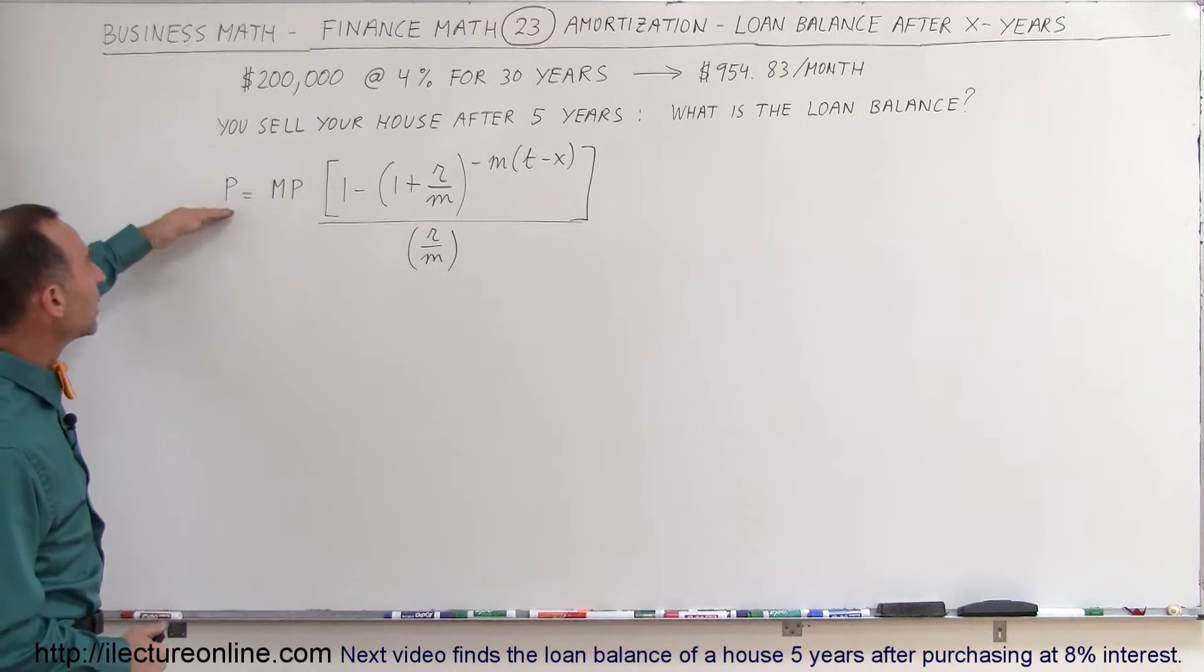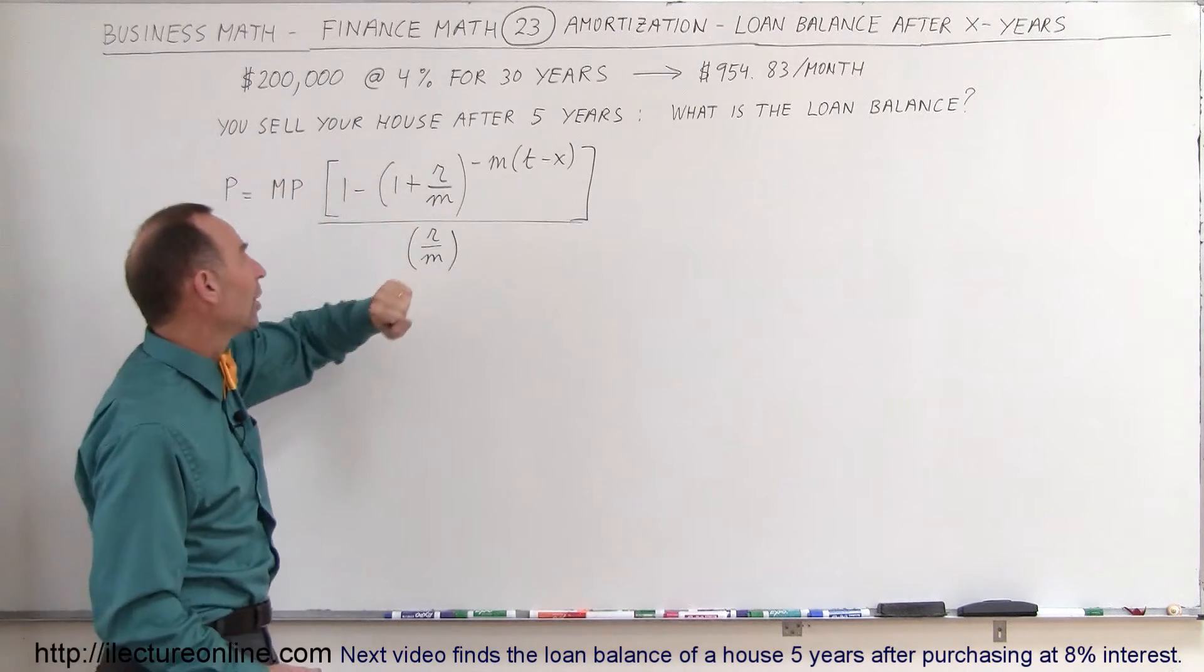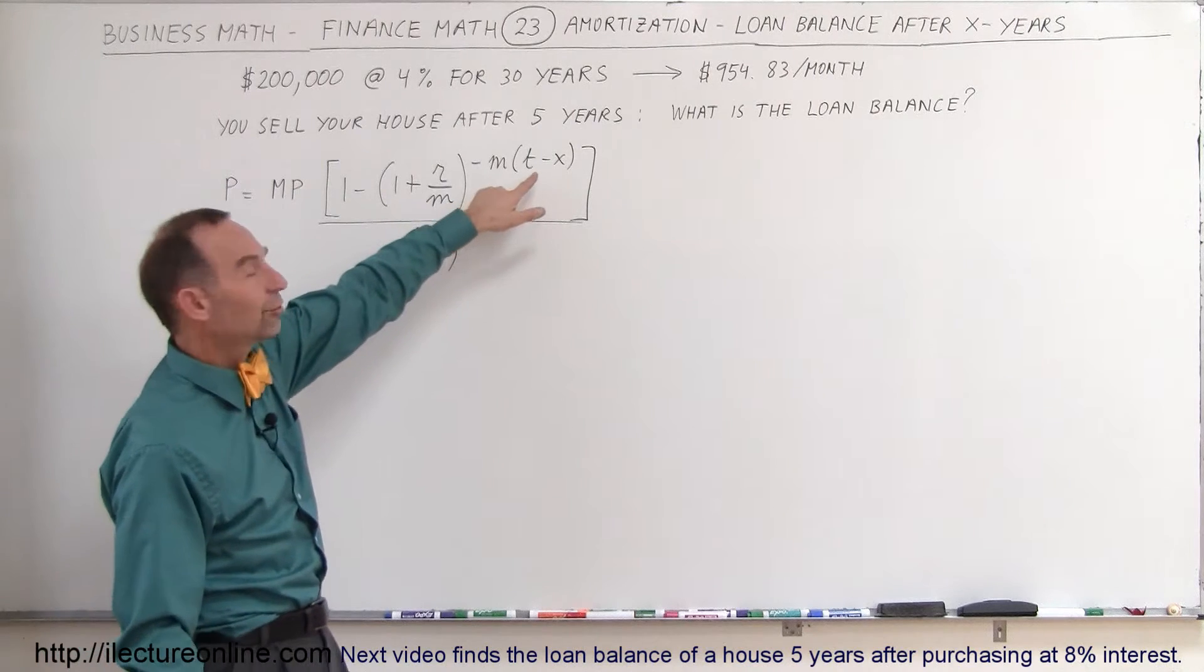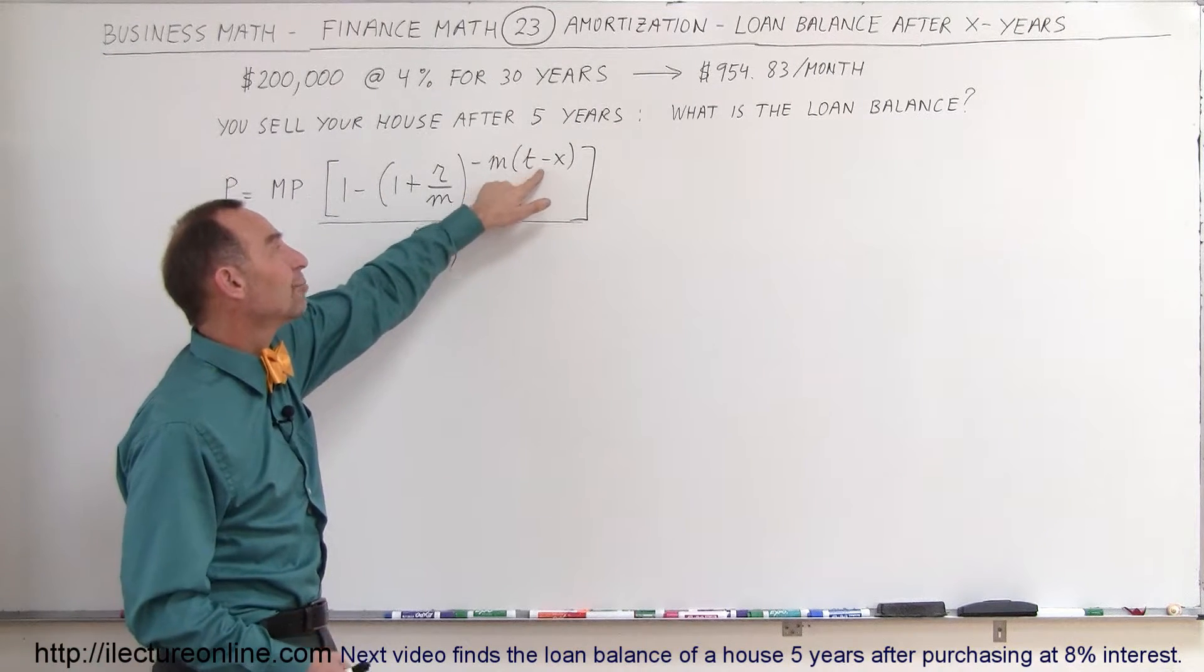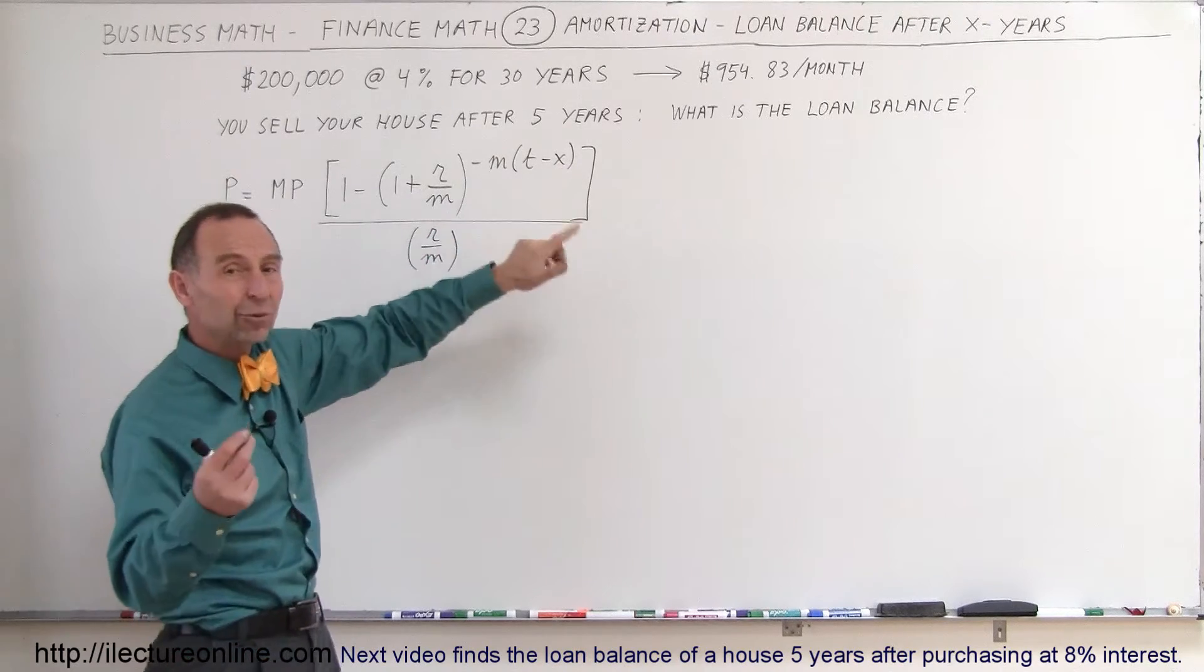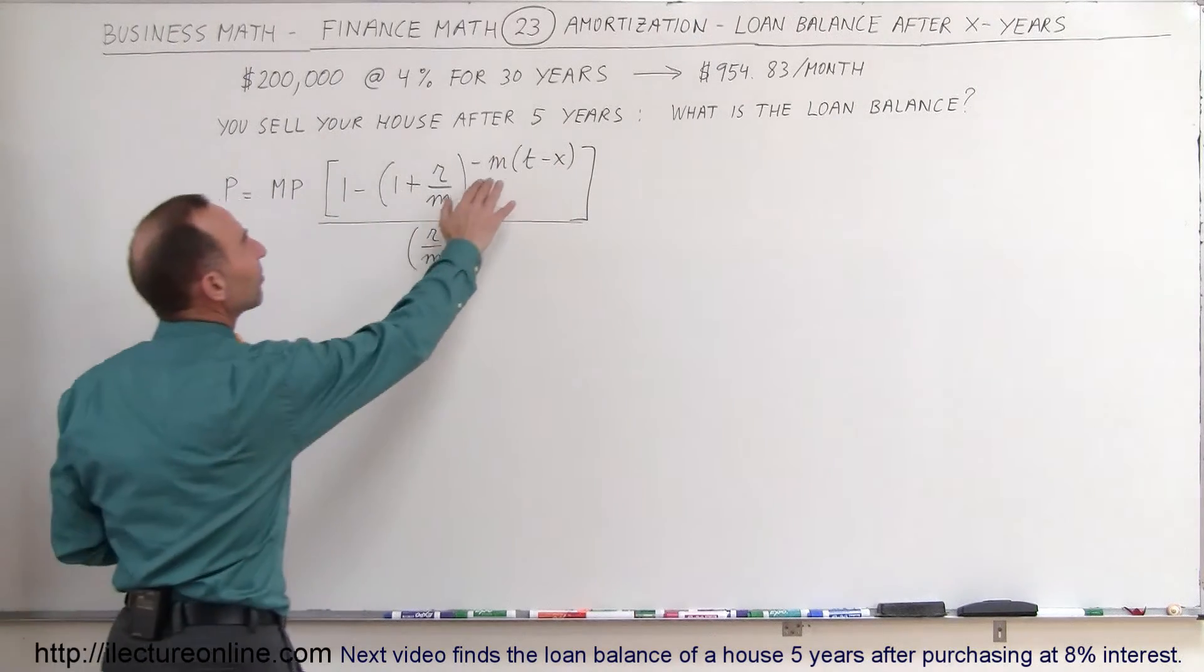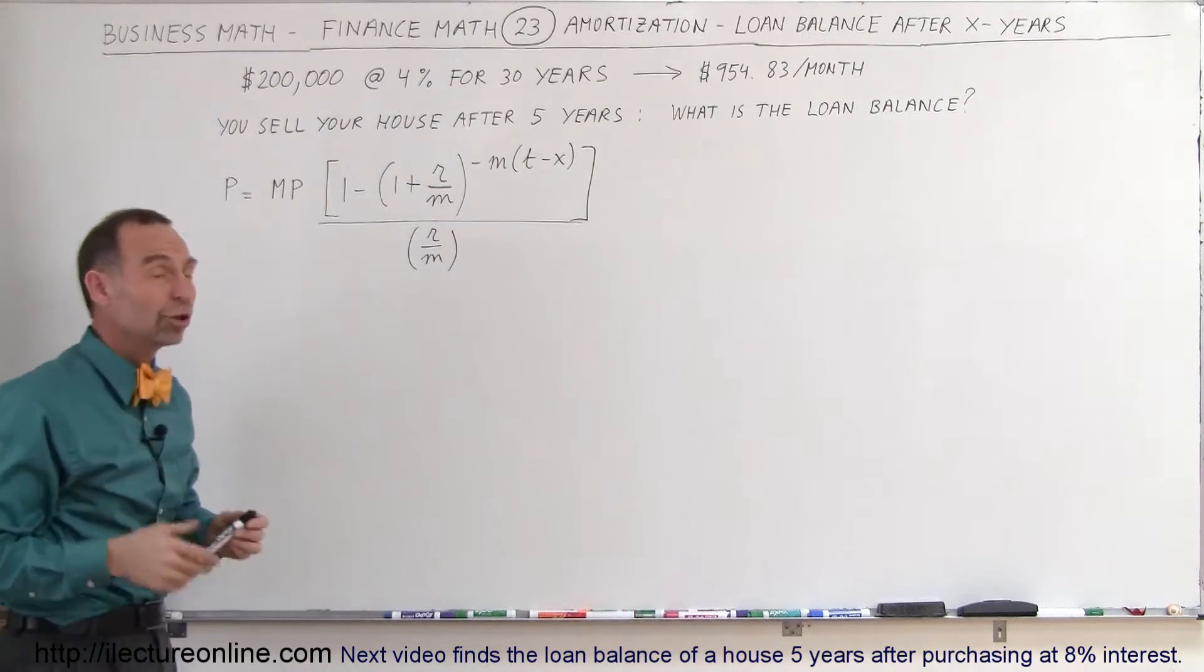And so the principal remaining will be equal to monthly payment times the rest of this equation. And notice that here, instead of showing you the time of the loan, is the time remaining: 30 years minus five years which have passed. X will be the number of years that have passed. And so that would be minus M times 25. So let me show you the numbers.